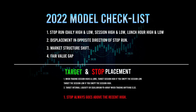Here's the checklist. First, you want a stop run: above a daily high, below a daily low, above a session high, below a session low, or the lunch hour high/low. The lunch hour is between 12 noon and 1 PM New York time — do not place trades in that one hour. It's a consolidation phase. If you have a trade running before that hour, you can let it run, but don't open new trades during that window.